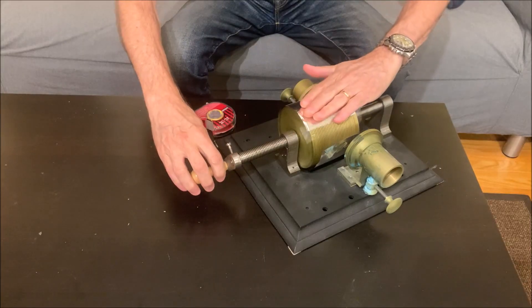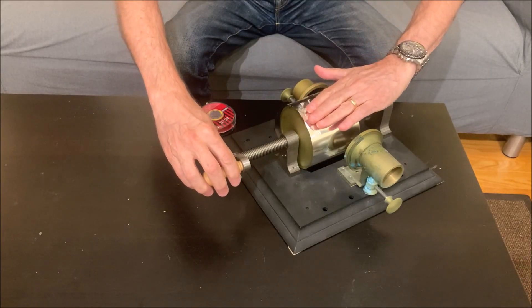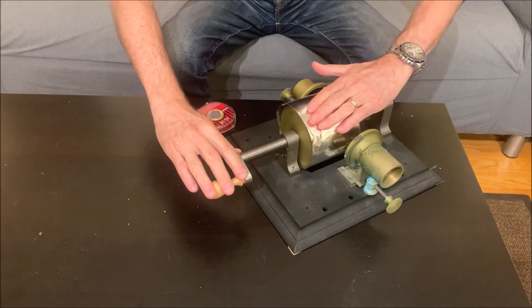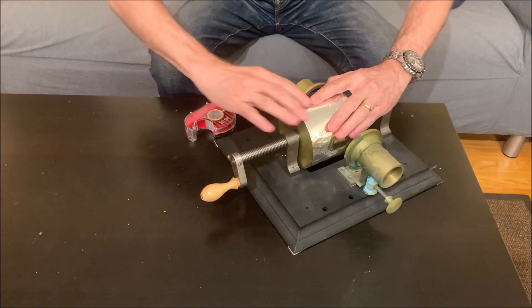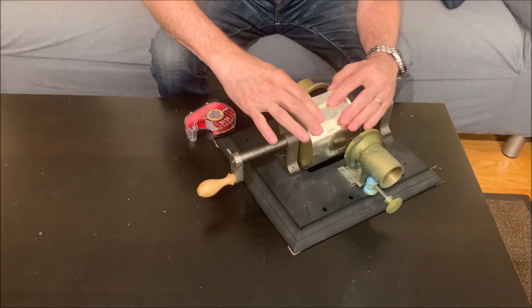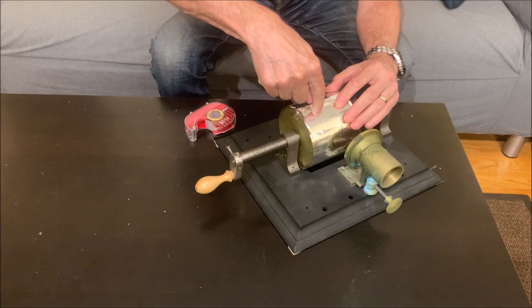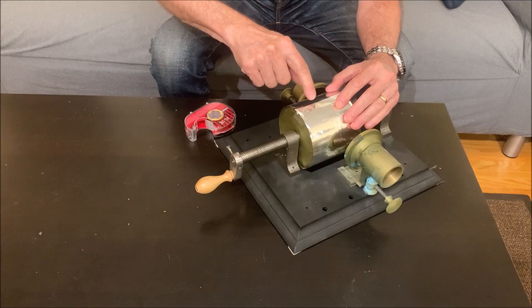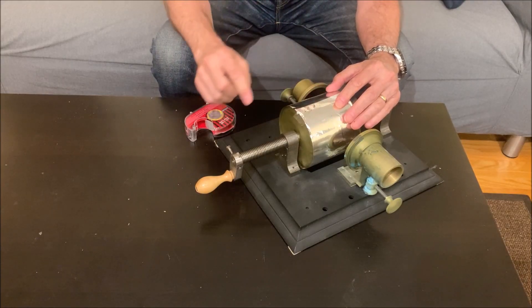Now I can wrap it around a little bit better. Oh, I got a little wrinkle in there. That might be a problem. Now you want to make sure it's overlapped this way so when the needle runs across it, it's not digging into that piece of tinfoil. It's riding over top of it.